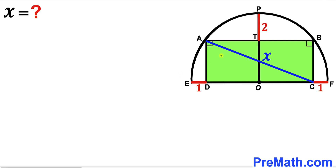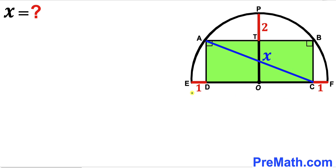Welcome to PreMath. In this video we have got this green shaded rectangle ABCD fully inscribed in a semicircle with the center O, as you can see in this given diagram, such that EF is the diameter of this semicircle. Moreover, this horizontal segment ED is one unit and likewise this horizontal segment CF is one unit as well.